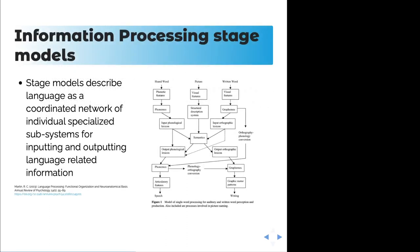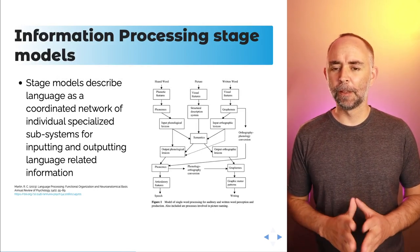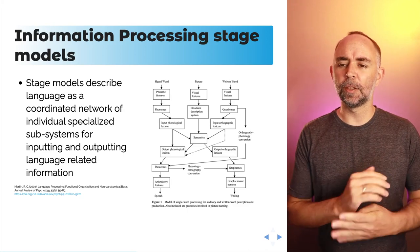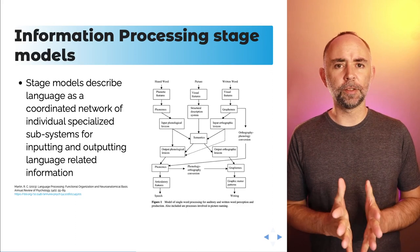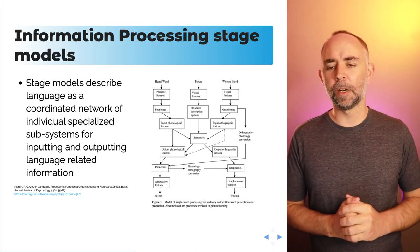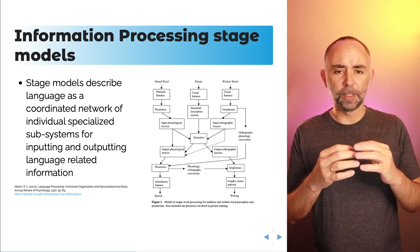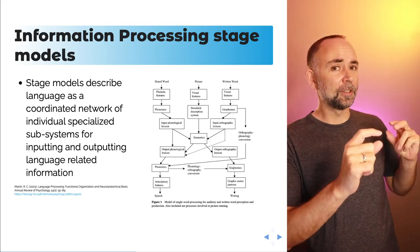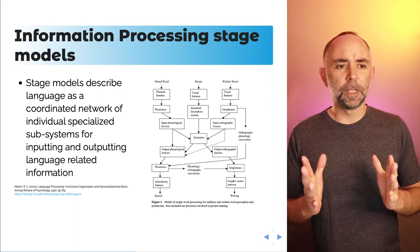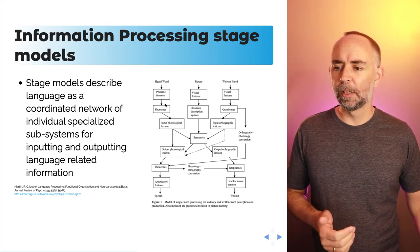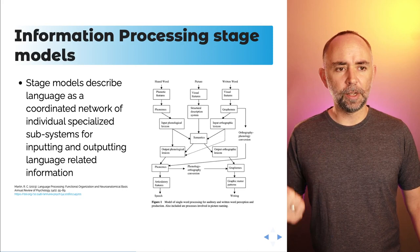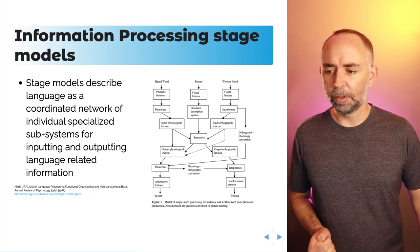A related approach to understanding language that also involves specialized theories is to think of language in terms of processing stage models. We've talked about this general idea before — remember the assembly line metaphor of cognition, where information comes in through your sensory systems and gets processed. Maybe you attend to some of that information, chunk it, put it into short-term memory, maybe into long-term memory so you can remember it later. If you adopt a processing stage metaphor for cognition, you can come up with pictures describing language as a coordinated network of individual specialized subsystems for inputting and outputting language-related information.